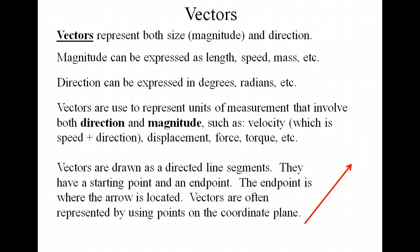A vector represents anything that has both size and direction. We often hear the term magnitude instead of size when referring to vectors, but it just represents things like length or speed or mass. Direction measures things in degrees, radians, revolutions or anything like that that gives us a direction.